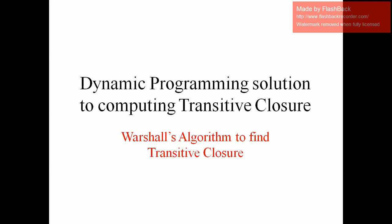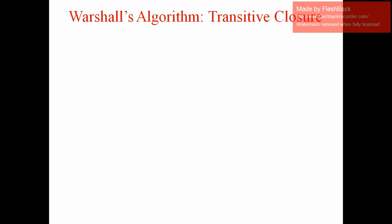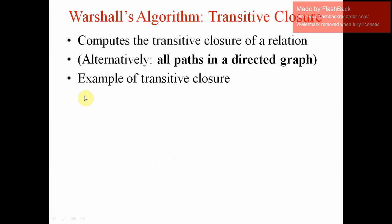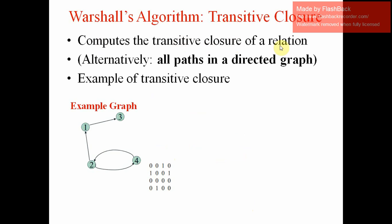We are going to discuss the Warshall algorithm to find transitive closure. It is based on the dynamic programming method and is a continuation of Floyd's all-pair shortest path algorithm. The objective of the algorithm is to find the transitive closure of a relation. We'll see an example with this graph.